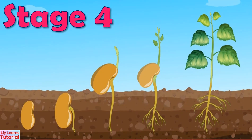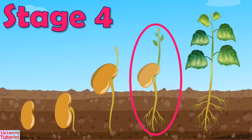Stage 4: The new plant spreads its roots. There will be more smaller roots that spread out to anchor the plant to the soil.